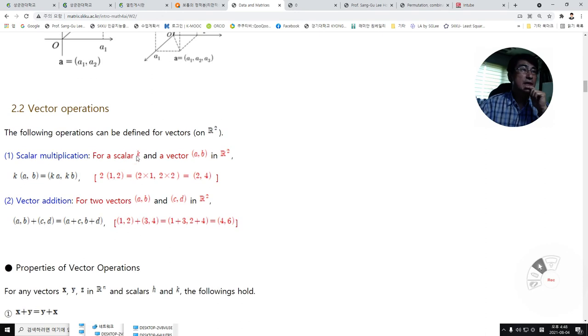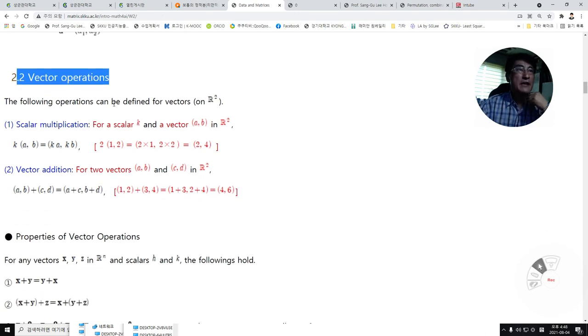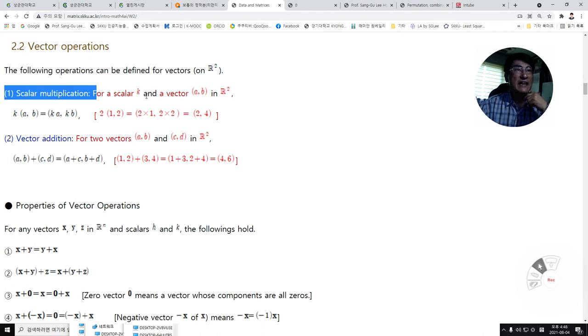Next, vector operations. The following operations can be defined for vectors in R2. First, scalar multiplication. For a scalar k and a vector in R2, it can be defined this way. For example, we have 2 times vector (1, 2), then it can be written as (2, 4).